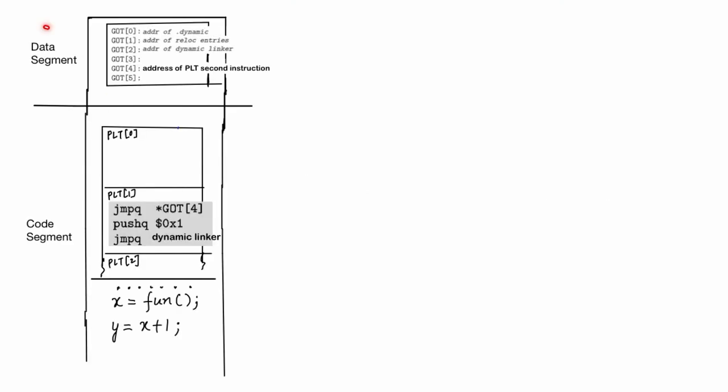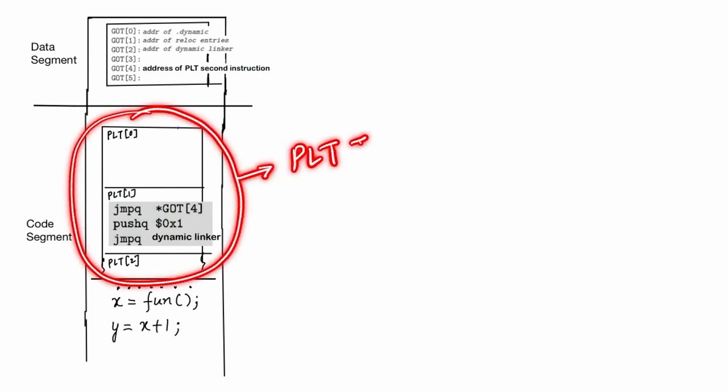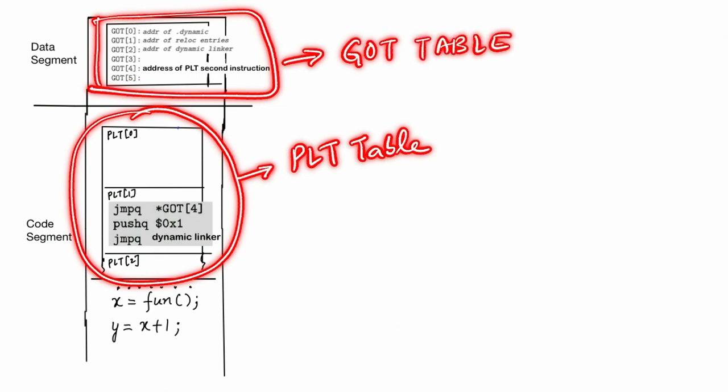Now that we have expanded our tables, let's bring them together to form a virtual address space of a running application. Picture this layout: on the left side we have a loaded application in memory, complete with both data and code segments. The PLT table resides within the code segment, while the GOT table is nested inside the data segment.